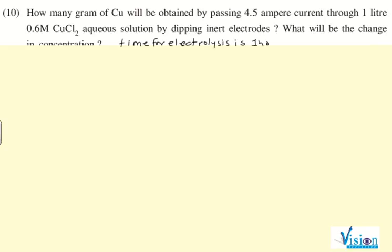Time for electrolysis is one hour. They have not given time in the question, so the first part is: how many grams of copper will be obtained if you are passing 4.5 ampere current for one hour?